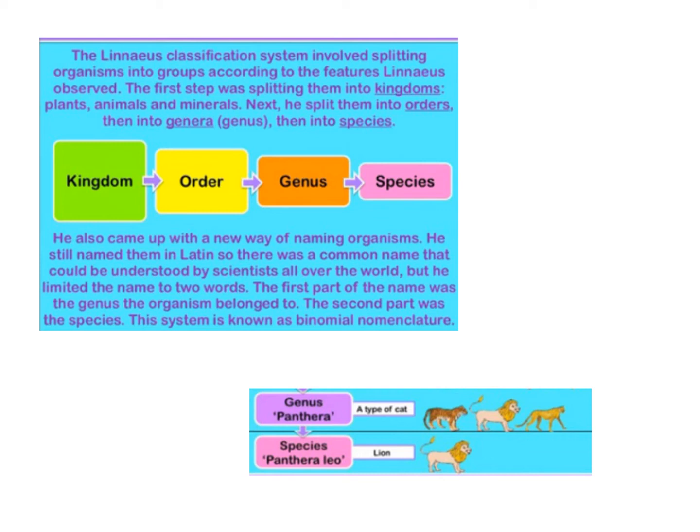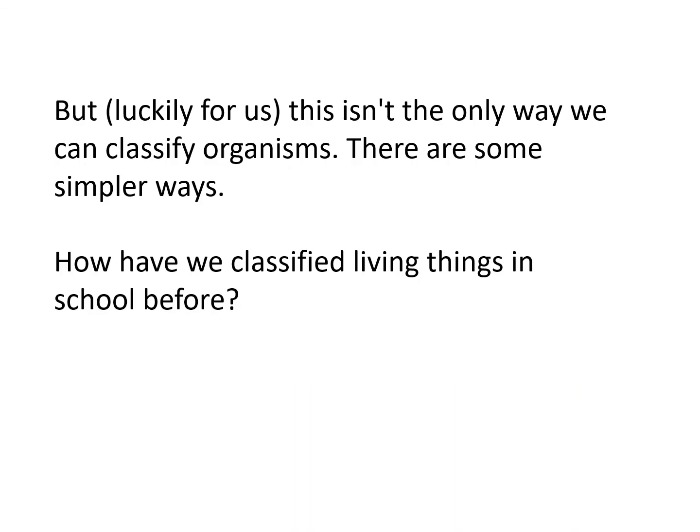So we can see here the genus for lion was Panthera and the species was leo, so the lion in Latin is called Panthera leo. Luckily for us, this is not the only way we can classify organisms — there are simpler ways. Think back to Year 4: how have we classified living things in school in the past? Pause the video if you need to, take a minute, and then click on.